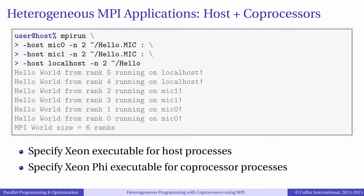It is important to remember that we have to provide different executables to processes on the CPU and on coprocessors. In this example, the name of the executable for the CPU architecture is hello and the executable for the many-core architecture is hello.mic. If this application had to be run in a cluster, we would specify the full host names defined in the cluster network or their IP addresses.